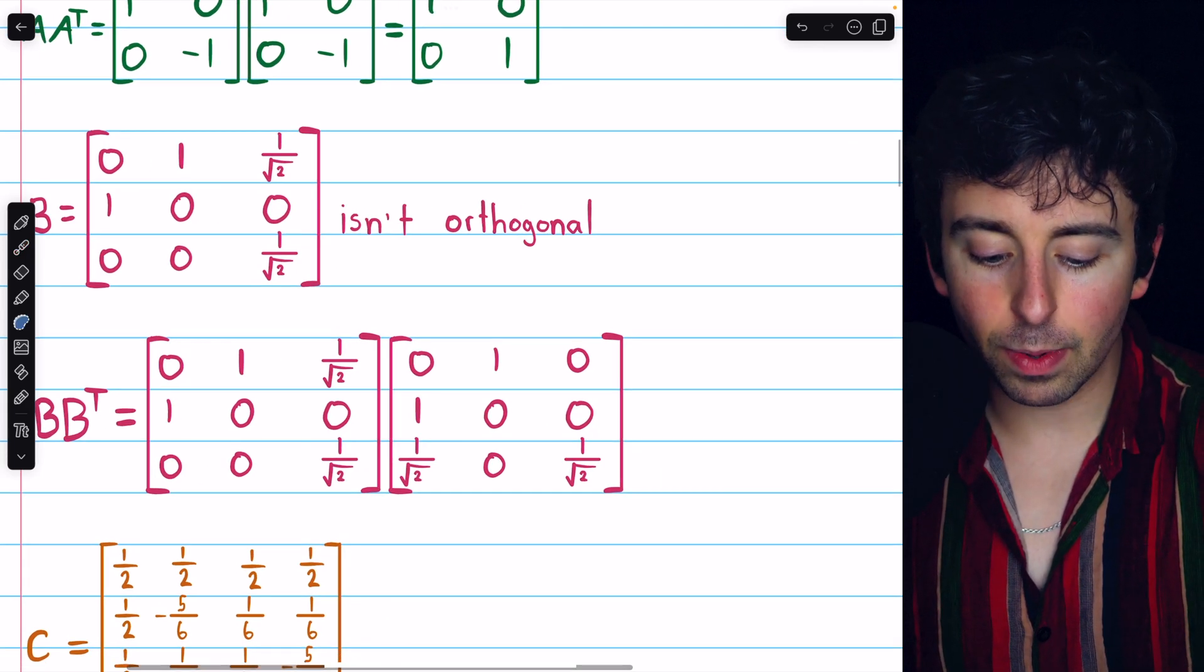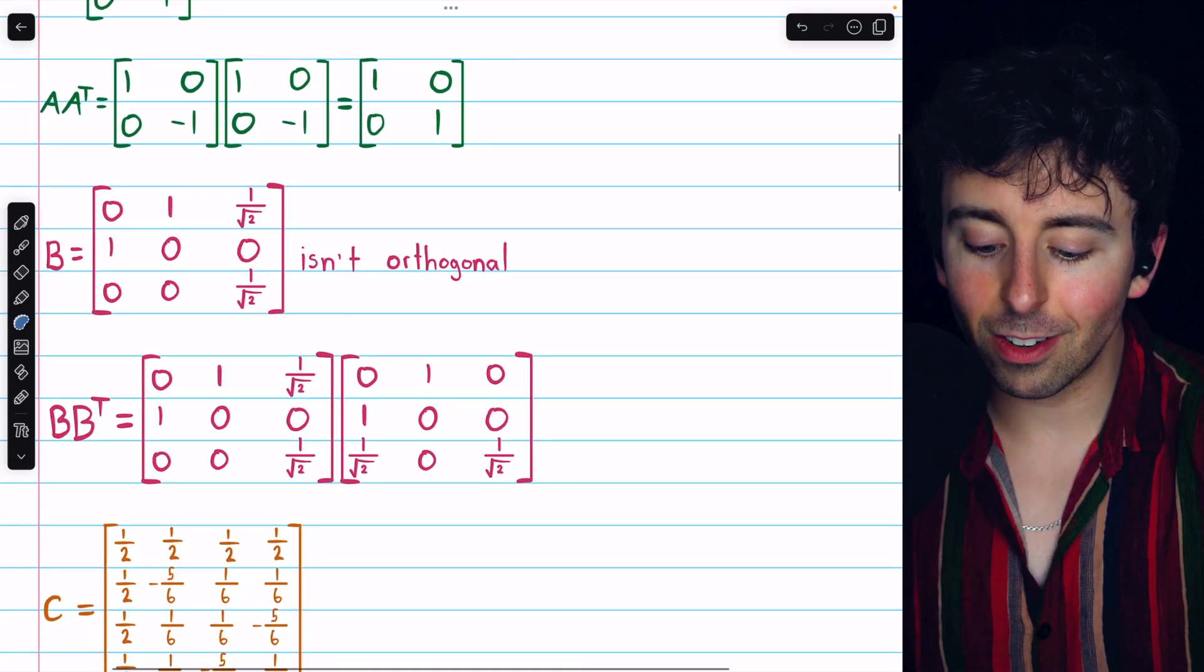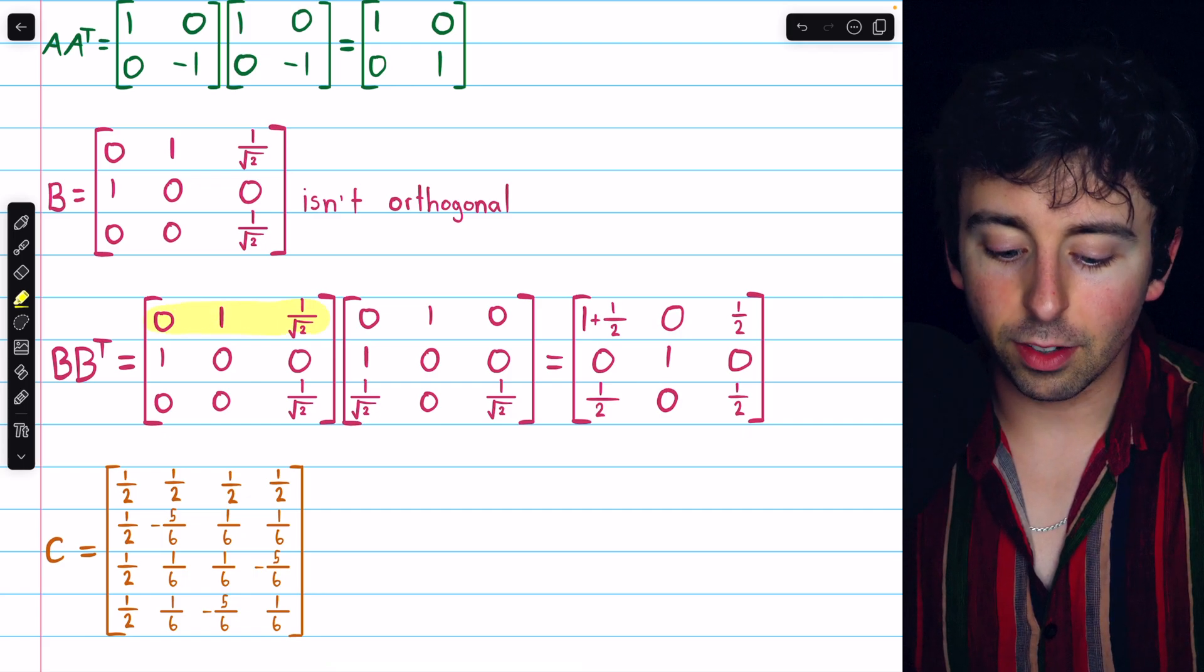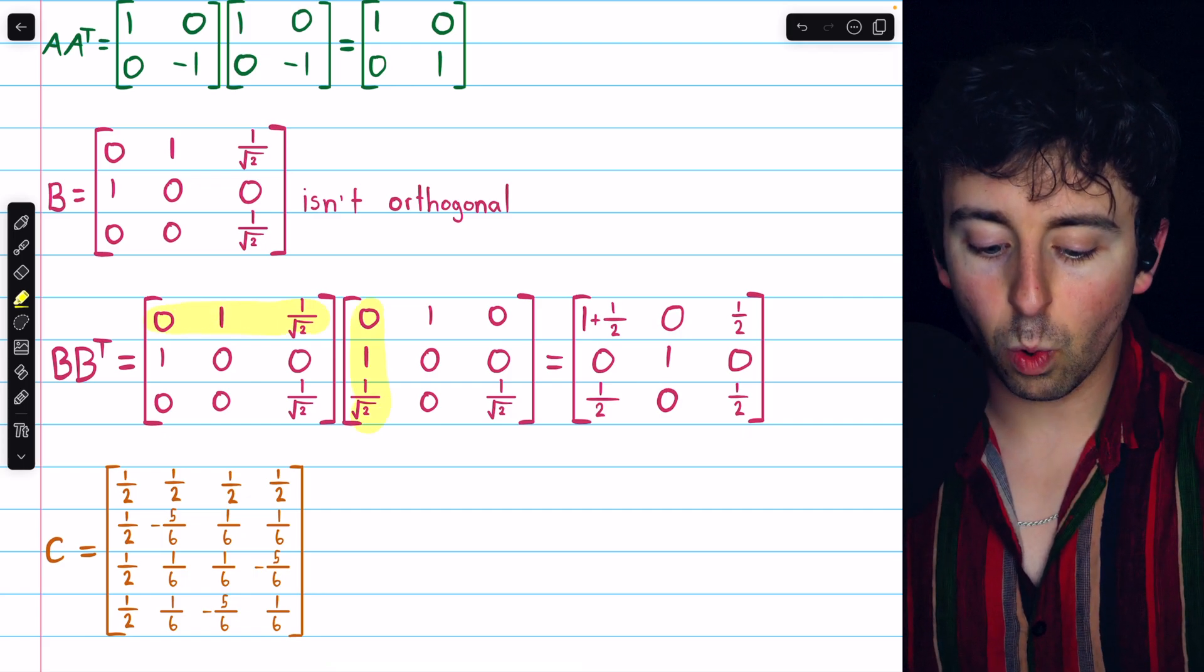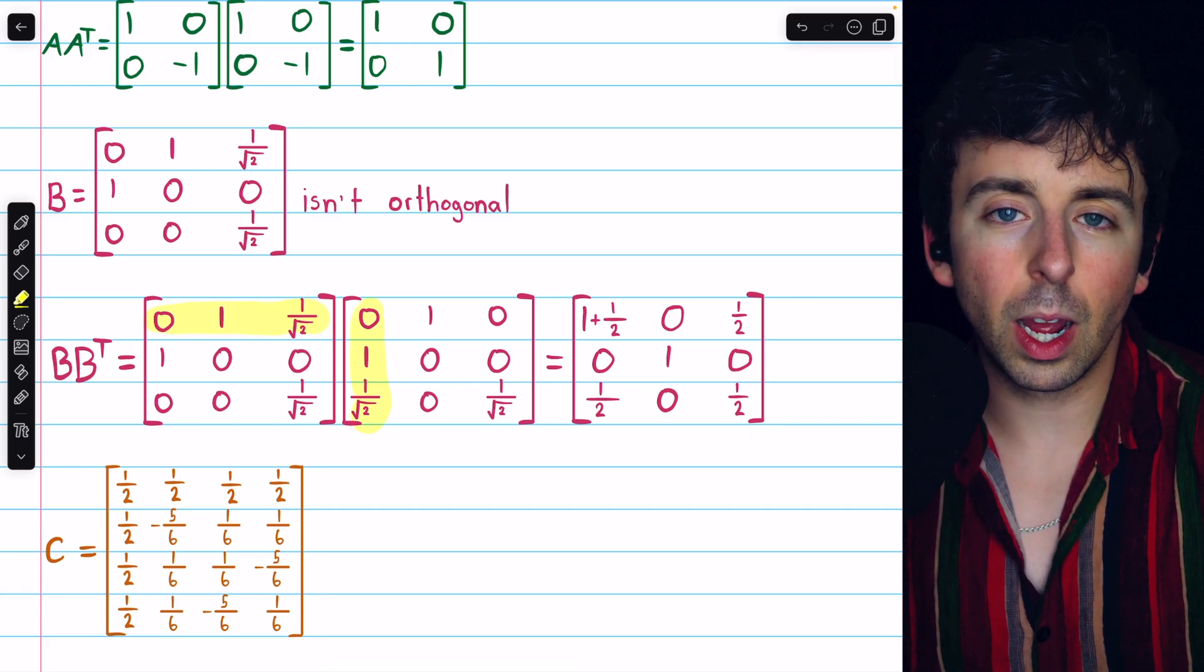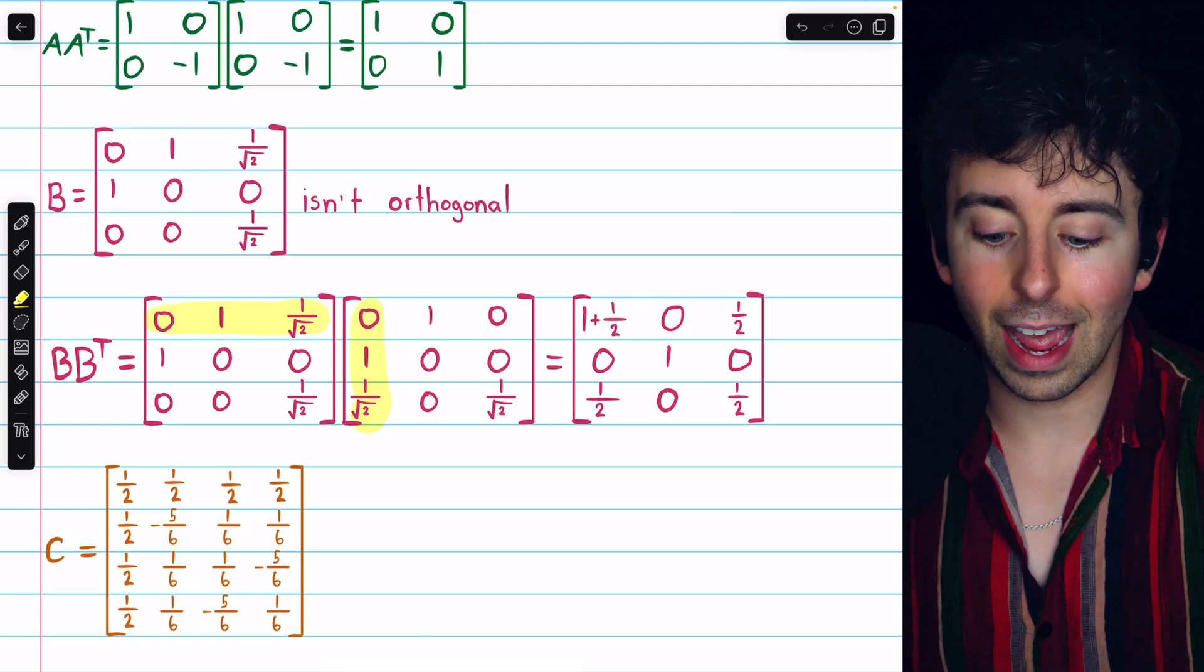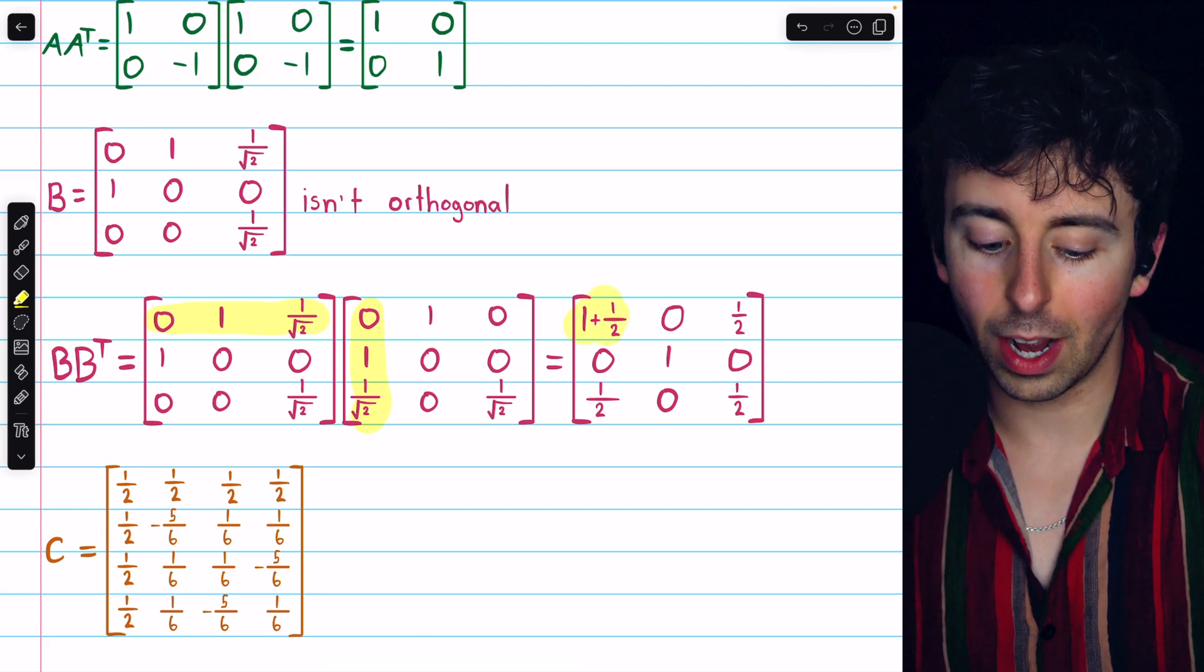Let's see what happens when we do the matrix multiplication. The first entry is going to be 0 plus 1 plus 1 over root 2 times 1 over root 2, so plus 1 half, so 1 plus 1 half.